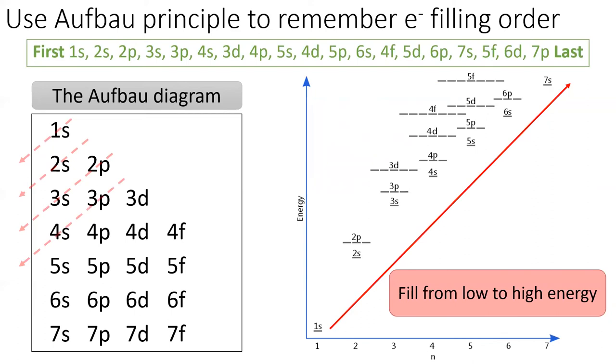Continuing this pattern, we see that we fill the 3p, then the 4s, then the 3d, then the 4p, then the 5s, then the 4d, the 5p, the 6s, the 4f, the 5d, the 6p, the 7s, the 5f, the 6d, and finally the 7p.